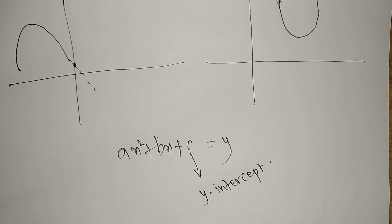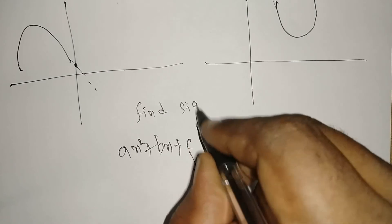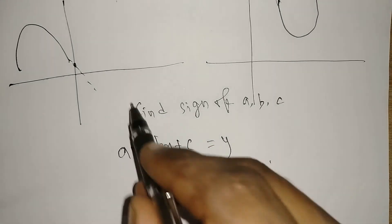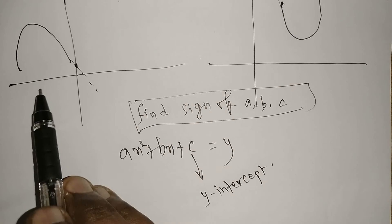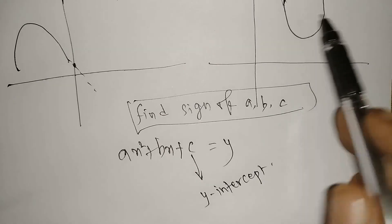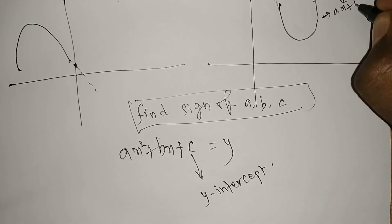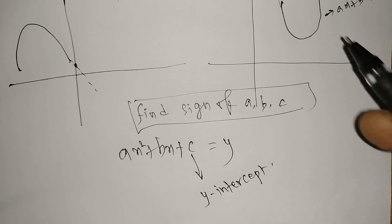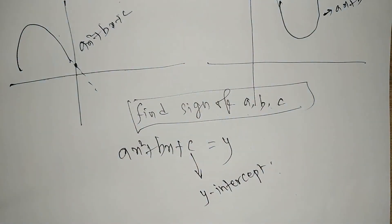The question is: find the signs of a, b, and c. They will give only the graph and ask this question. They will mention the equation is ax² + bx + c. Whether it is a downward or upward curve, it is definitely a quadratic equation. This is a very important one-mark question.